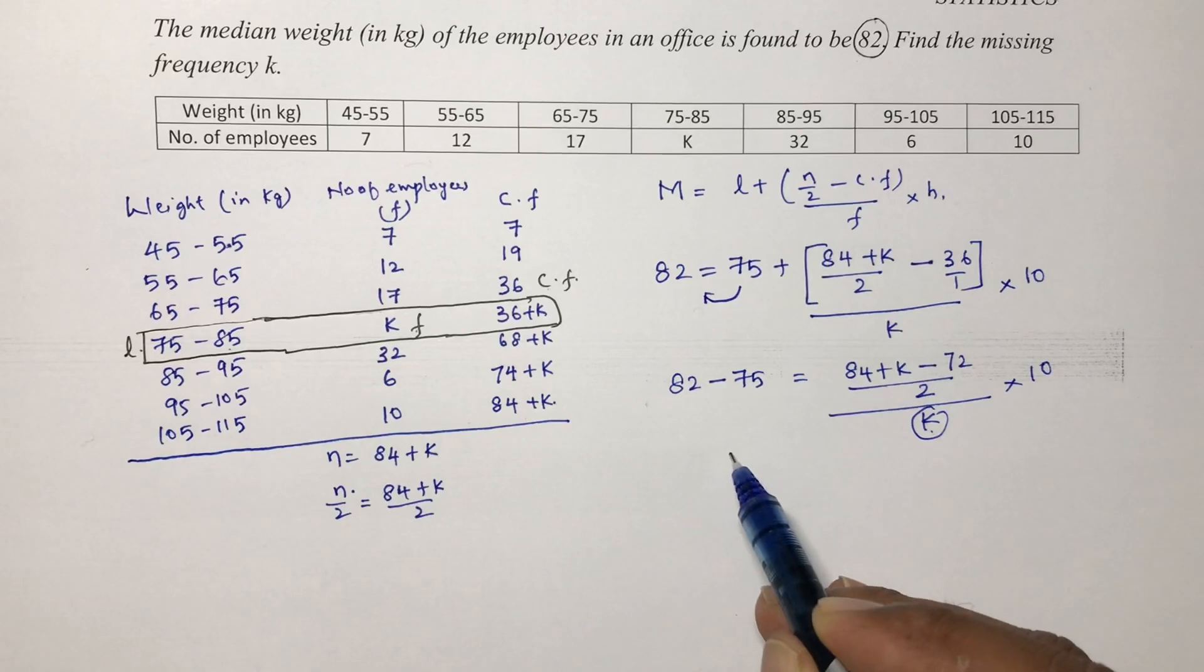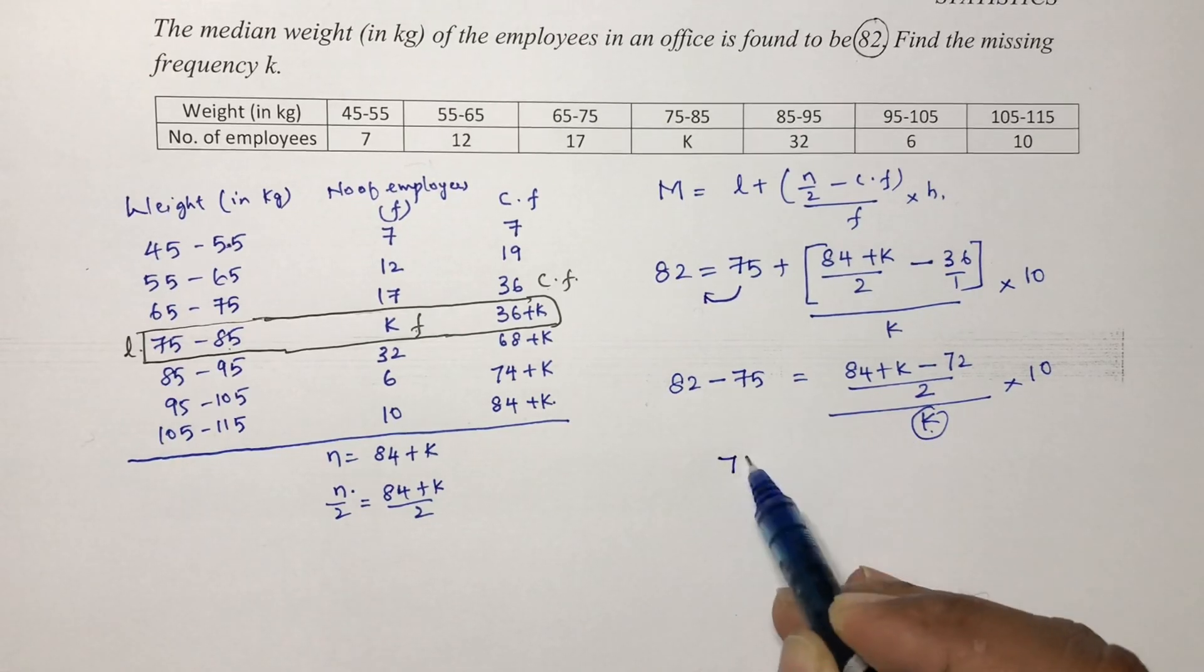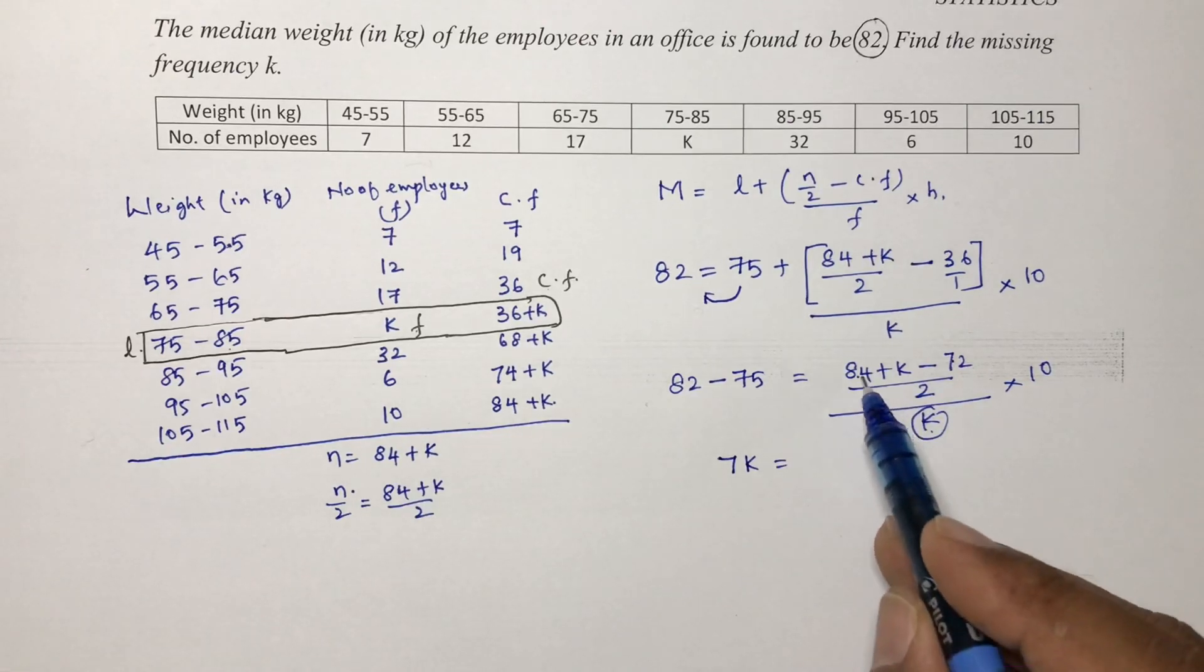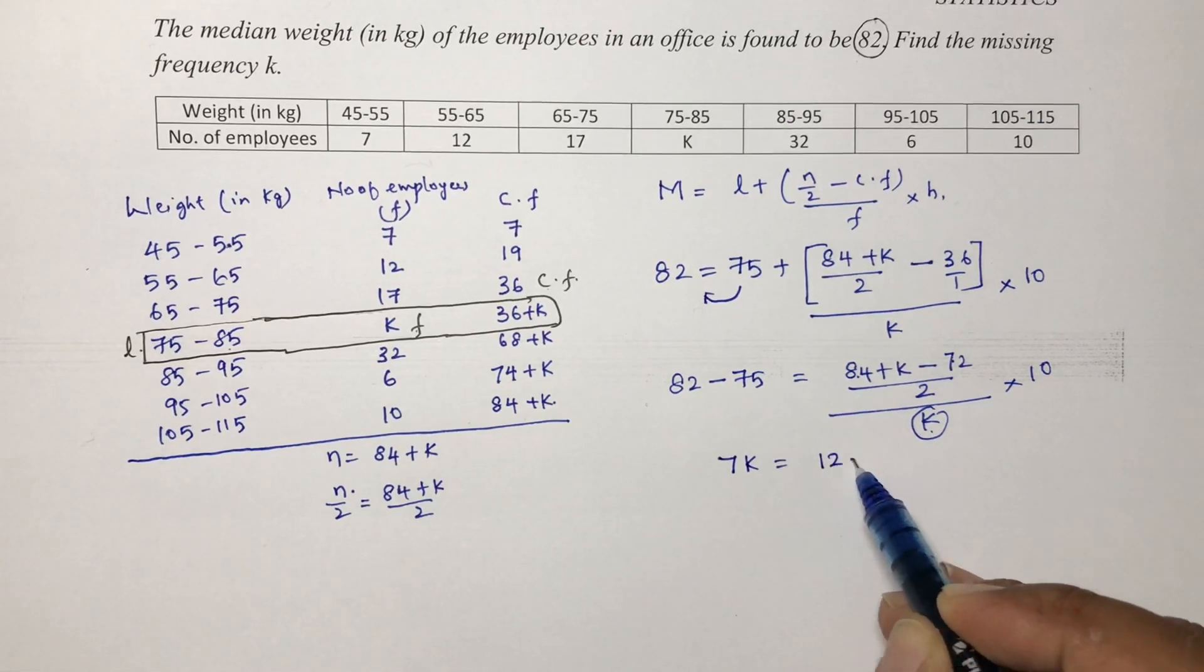This is 82 minus 75 is 7. If we will transpose, 7k, 84 minus 72, that is 84 minus 72 is 12 plus k.